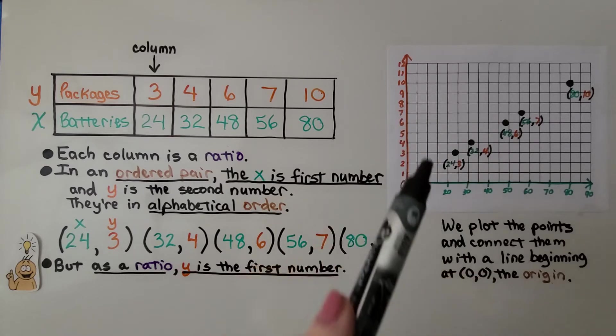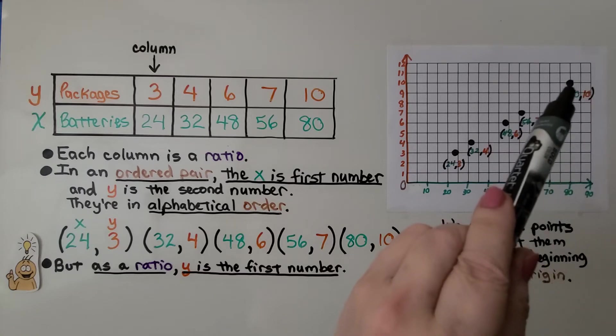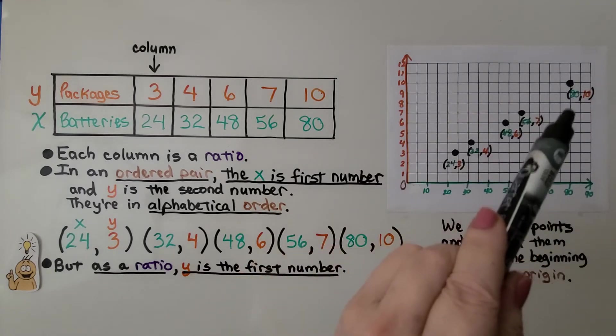And then we have 80, 10. That's an easy one. We go to 80, we go to 10, and that's where we plot our point.